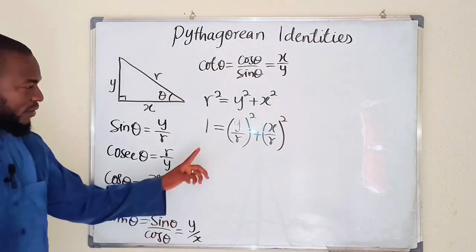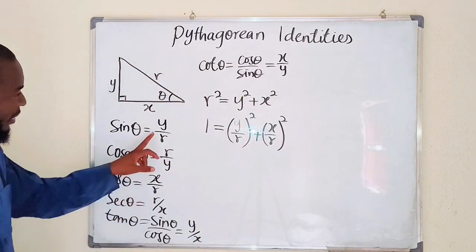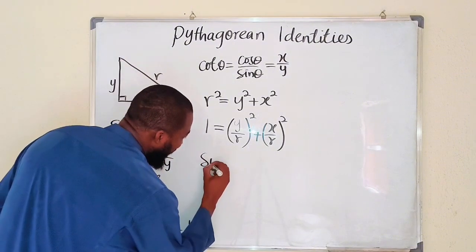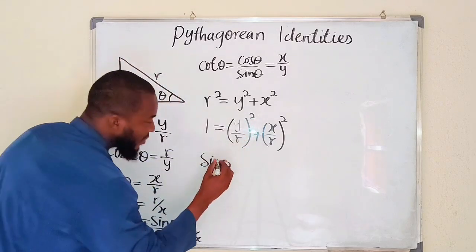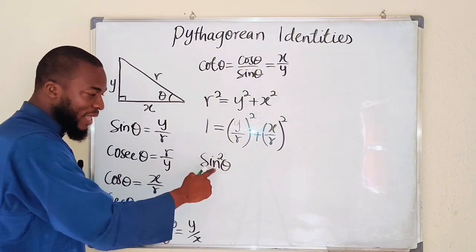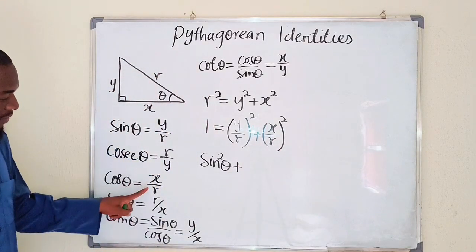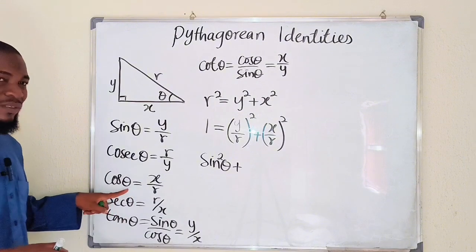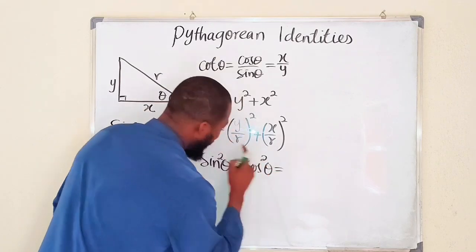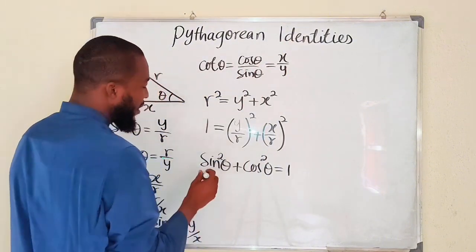You can see that y divided by r is sine of theta, so (y/r)² is sine squared theta. And x divided by r is cosine of theta, so (x/r)² is cosine squared theta. Therefore, sine squared theta plus cosine squared theta equals one. Note: write the power between 'sin' and 'theta' — so sine squared theta, not sine theta squared. This is one of the important Pythagorean identities — let me box it.